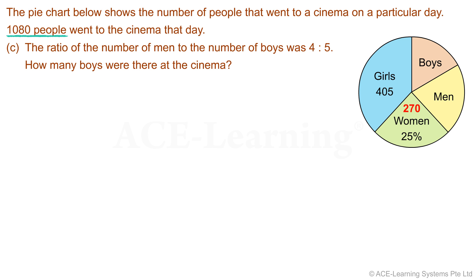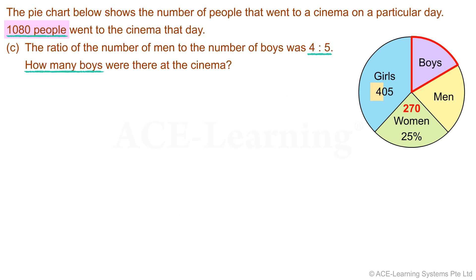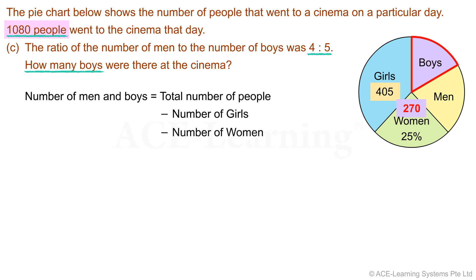Let us now look at the last part of the question. We are required to find the number of boys present at the cinema given the ratio of the number of men to the number of boys. The total number of men and boys must be found before we can apply the given ratio. Step 2: Devise a plan. We take the total number of people and subtract the number of girls and women from it. Then we apply the given ratio to find the number of boys.